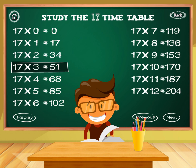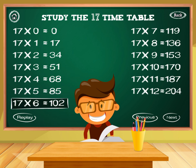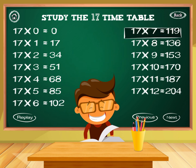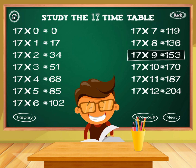17 times 3 equals 51. 17 times 4 equals 68. 17 times 5 equals 85. 17 times 6 equals 102. 17 times 7 equals 119. 17 times 8 equals 136. 17 times 9 equals 153.